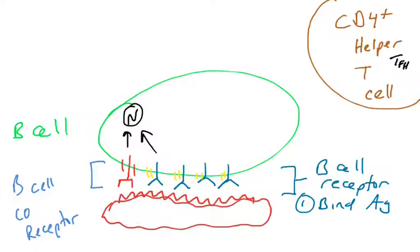They need to show the T cell what they're binding. They do that via a process called receptor-mediated endocytosis, which we'll cover more when we talk about T cells in the next unit. But we'll introduce that concept here.